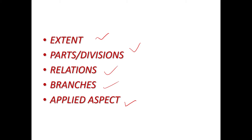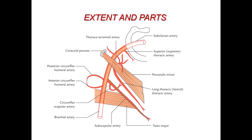To begin with the extent of the axillary artery — this artery is the continuation of the third part of the subclavian artery in the axilla. It extends from the outer border of the first rib, descends down to reach the teres major muscle, and ends at the lower border of the teres major muscle. Beyond this, the axillary artery continues as the brachial artery in the arm.